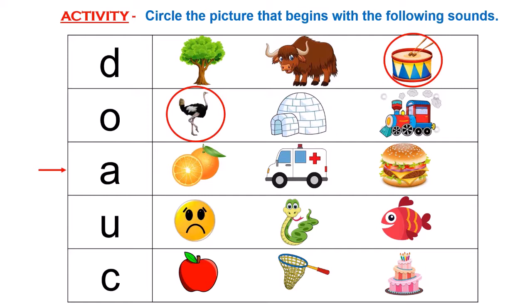Which picture begins with the A sound? Is it an orange, an ambulance, or a burger? Very good! Ambulance begins with the long A sound. Very good!